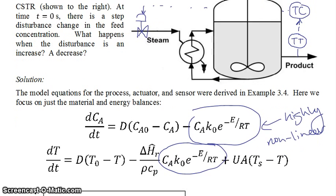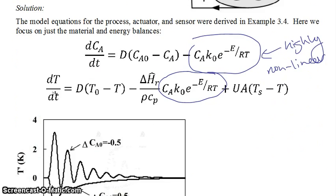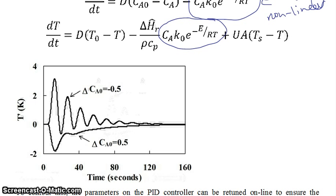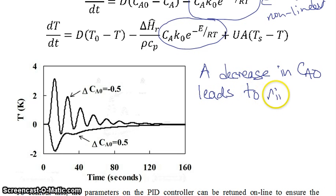In fact, what we see, and this is how the book illustrates it, if you have a step decrease in your CA feed, or CA0, so if you have a step decrease, a decrease in CA0 leads to ringing, which is what you have there.